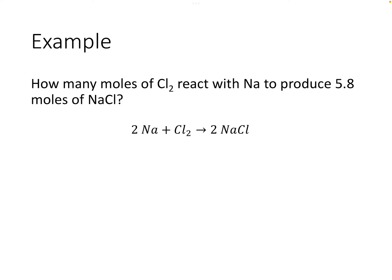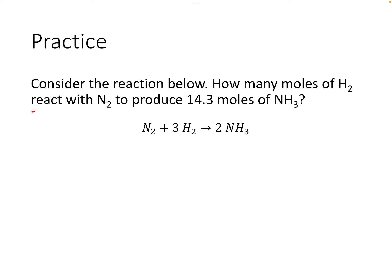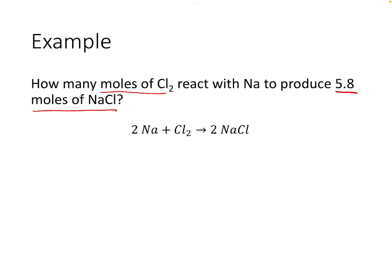Let's do an example. Let's say we're trying to figure out how many moles of Cl₂ react with sodium to produce 5.8 moles of sodium chloride. It looks like we're solving for moles of chlorine, and we're given moles of sodium chloride, which is what we're eventually going to cancel out.